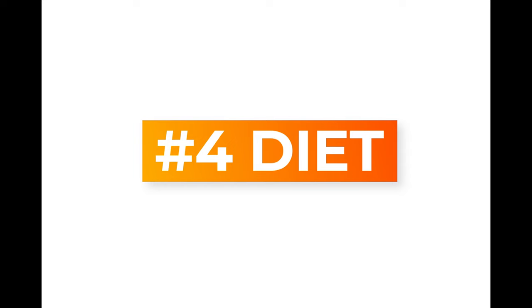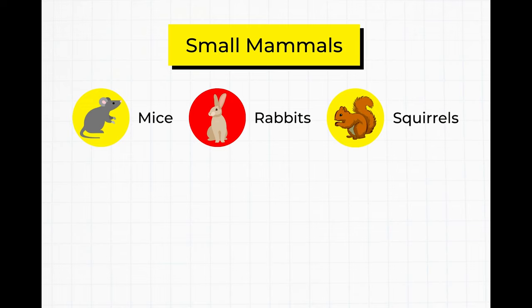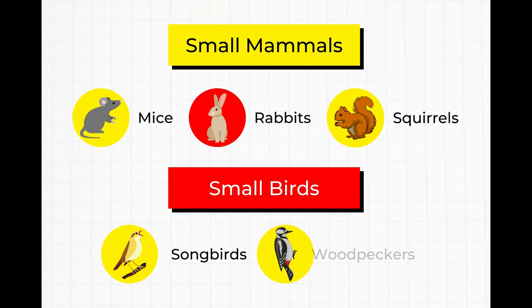Number four. Although some differences exist between a hawk's diet and an eagle's, there are also many similarities. For instance, both species tend to prey on small mammals such as mice, rabbits, and squirrels, and will also hunt smaller birds such as songbirds or woodpeckers.